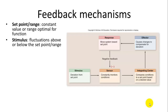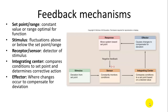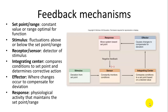The body must be able to detect changes from this set point or range, and that is called a stimulus. There must be a receptor or sensor which detects the variations in that stimulus. The sensor then passes information on to the integration center — in humans, that's your brain — which compares the set point and the stimulus and then takes some corrective action if necessary. The effector is what actually causes the change to compensate for that deviation.